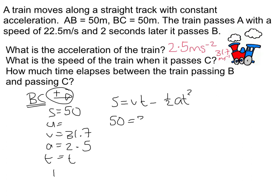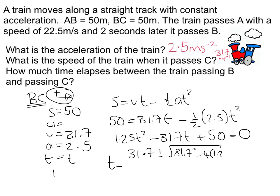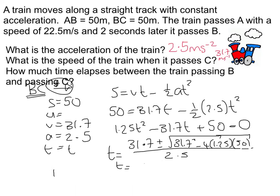Putting everything in: 50 equals 31.7T minus a half times 2.5 times T squared. Rearranging, we get 1.25T squared minus 31.7T plus 50 equals 0. Using the quadratic formula: T equals 31.7 plus or minus the square root of 31.7 squared minus 4 times 1.25 times 50, all divided by 2.5. That gives us 1.7 seconds and 23.7 seconds.